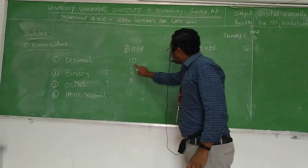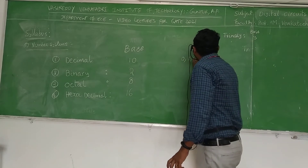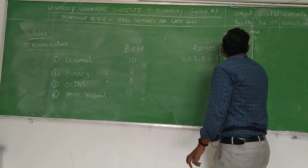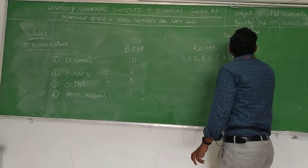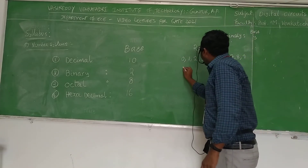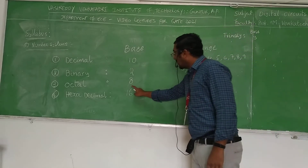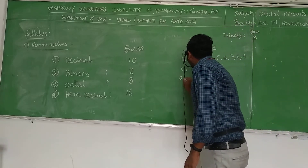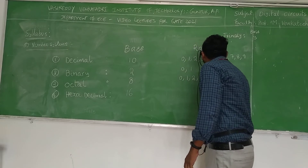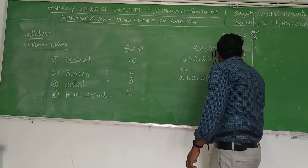Decimal has a range starting from 0, 1, 2, 3, 4, 5, 6, 7, 8, and 9. Binary has a range of 0 and 1. Octal has a range of 0, 1, 2, 3, 4, 5, 6, and 7. For hexadecimal, since you cannot use 10, 11, 12, 13, 14, or 15 as single digits, the first six English alphabets are used: A, B, C, D, E, and F, where A=10, B=11, C=12, D=13, E=14, and F=15.